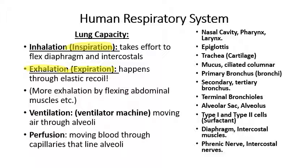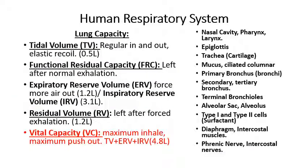Ventilation refers to circulating air through the lungs, and you use a machine called a ventilator to do that. Perfusion means moving the blood through the capillaries — the little blood vessels that surround the alveoli. Now we have numbers associated with the different types of volumes of the lungs. When you're just breathing normally, the amount of air that goes in and out of your lungs with every normal breath is referred to as the tidal volume. That's generally about half a liter.